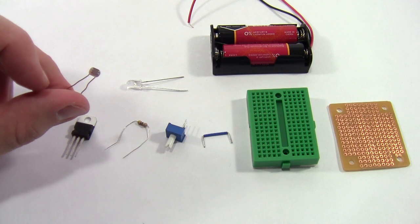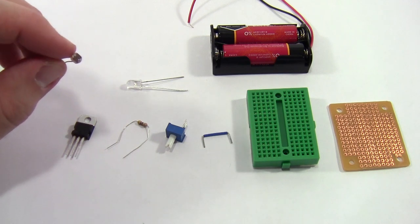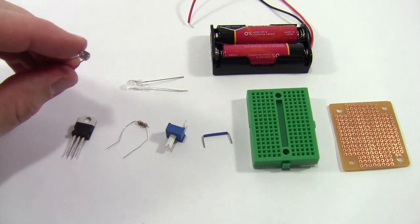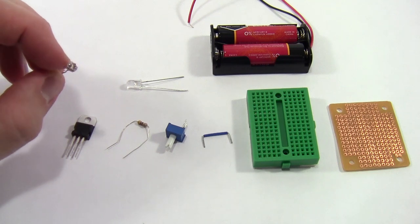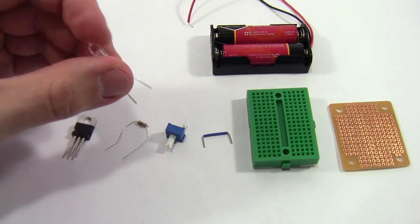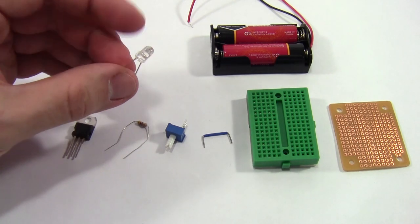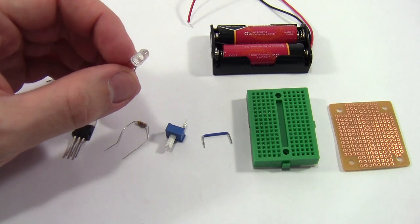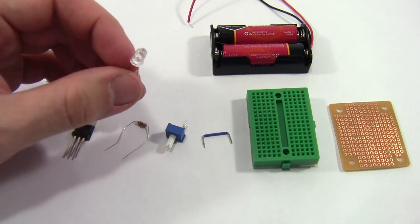First is the photoresistor, so this is the light sensor or the part of the circuit that detects light levels. These are also called LDRs for light dependent resistor or photo cell. We have an LED, in this case this is a super bright LED. Depending on what vendor you look at, these could also be called high efficiency LEDs or ultra bright LEDs.